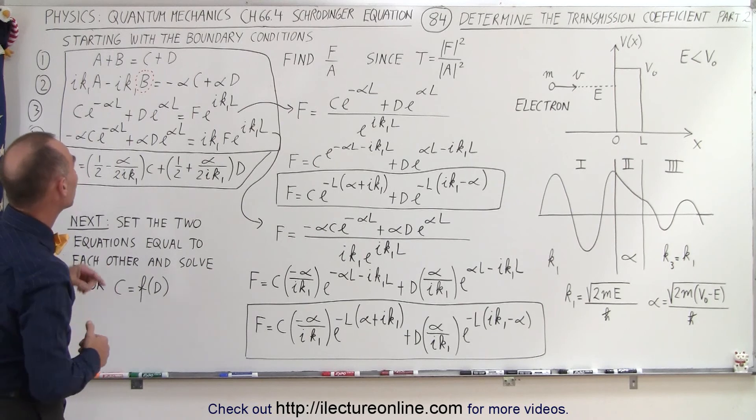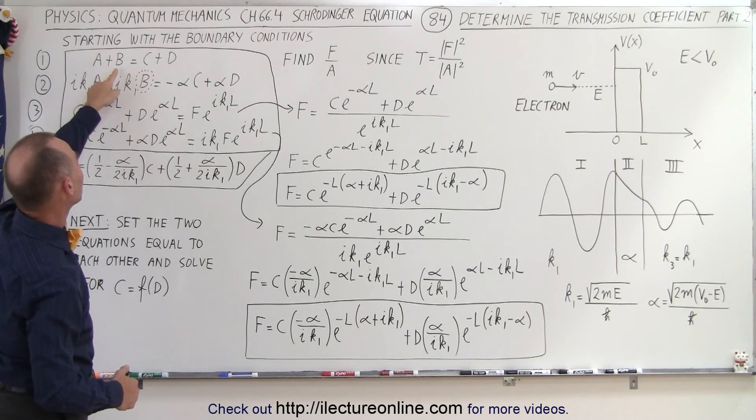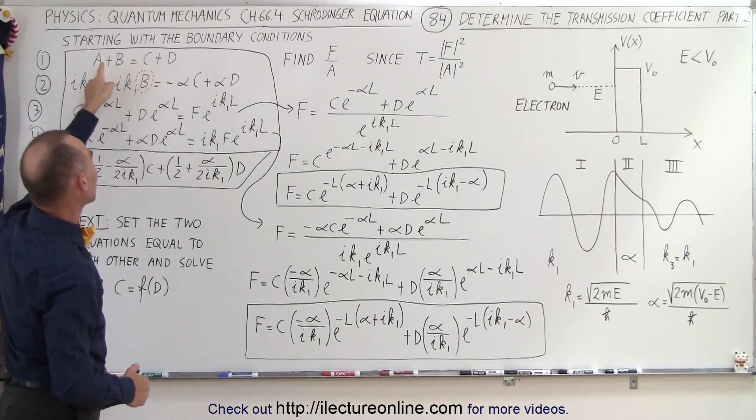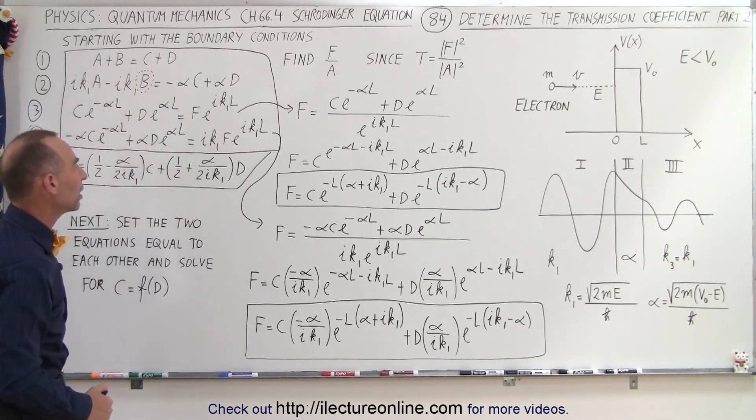In the previous video, we were able to eliminate the constant b by plugging in the equivalent of b, which is c plus d minus a, plugged it into here, thus eliminating b from the remaining three equations.